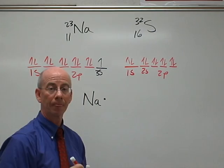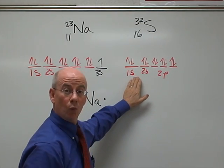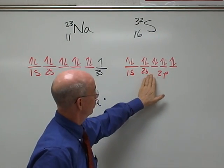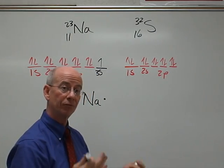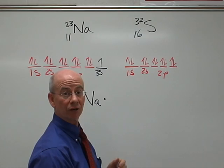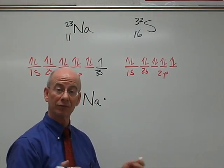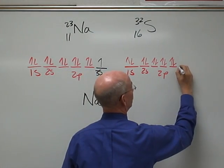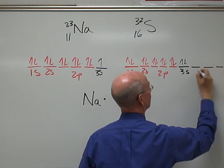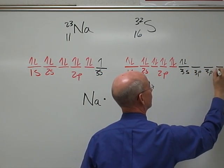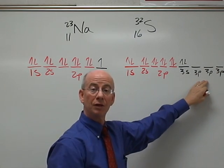And then let's look at sulfur. Sulfur has 1s2, 2s2, 2p6. Again, it's full. But then we get to the valence. Sulfur still has 16 electrons total. There's 10 accounted for there. We have 6 more. So we have 3s, and there are 2 of them.